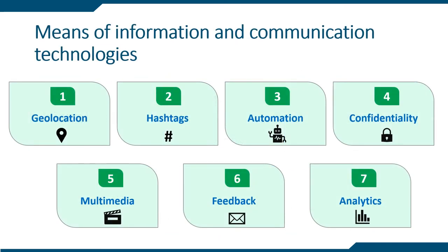Representation of a university in a social network is impossible without the use of ICT tools. We consider the ICT tools used by the universities for the design of their own digital profiles. Geolocation: allows to get the real geographical location of the university, as well as learn about the location of events, conferences, and seminars held on the basis of the institution. Hashtags: the use of hashtags makes it possible to reach more users. Automation: tools for post release, scheduling, sorting, filtering, posting at any time, etc. Confidentiality: to show or hide some information for the target audience.